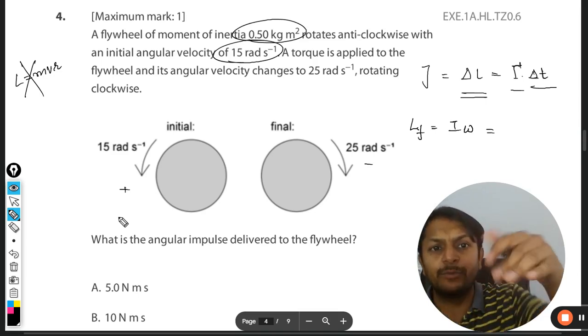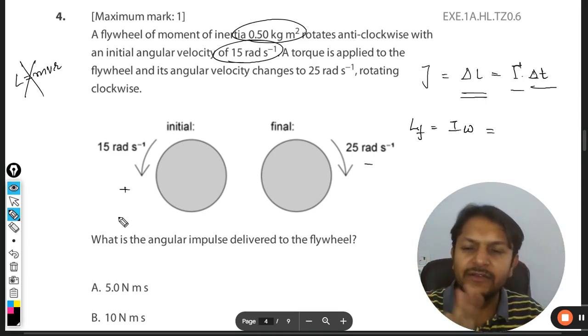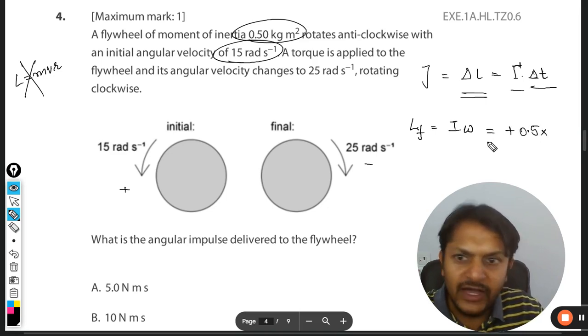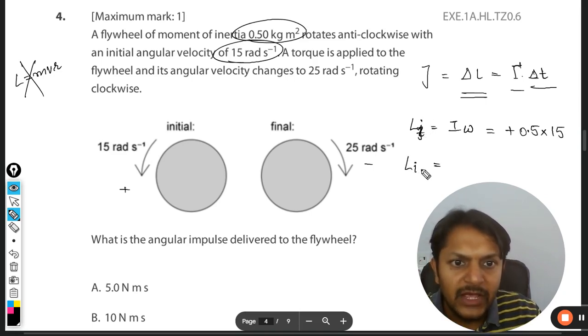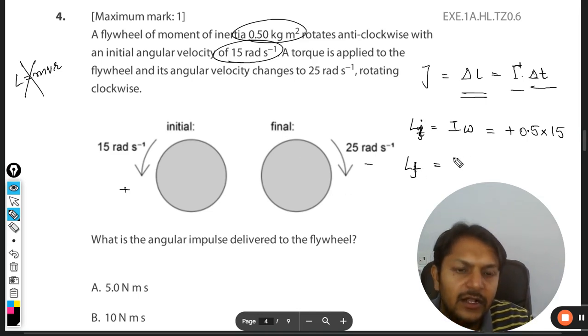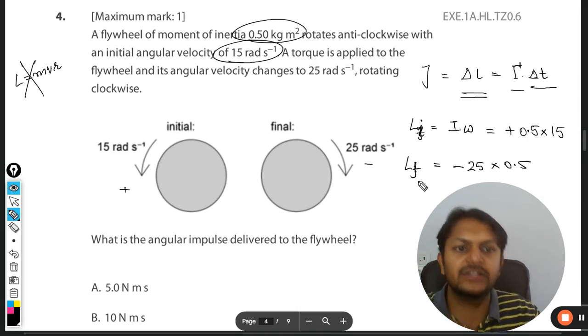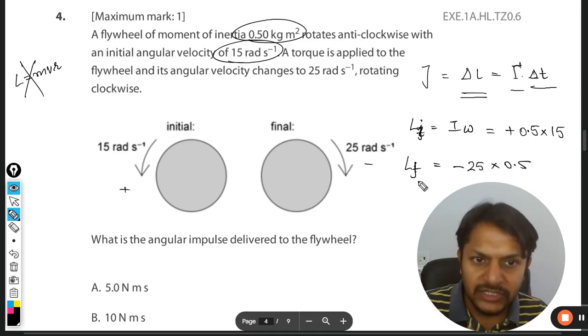It depends upon you, by the way, but doesn't matter. So final will be plus 0.5 times 15. Okay, and what is the... sorry, this is the initial. And what is the final? Finally it is negative 25 radians and the moment of inertia will be 0.5. So this is it.